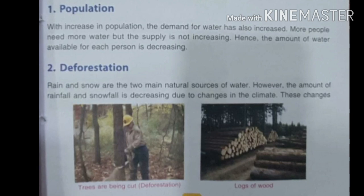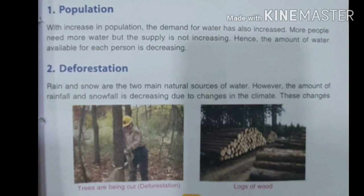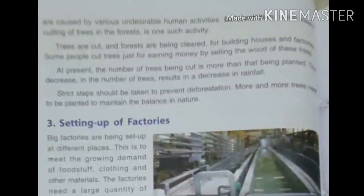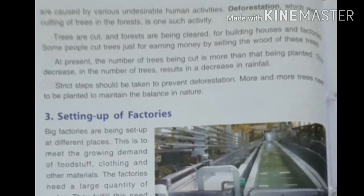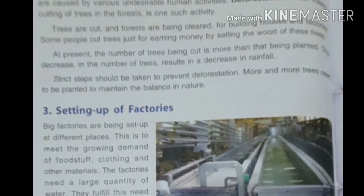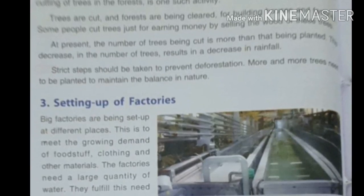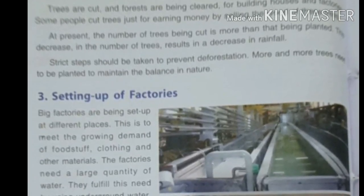As the number of trees being cut is increasing rapidly, rainfall and snowfall are decreasing due to climatic change. This causes less rainwater. To prevent deforestation, we should plant more and more trees before cutting them, to maintain the balance in nature.